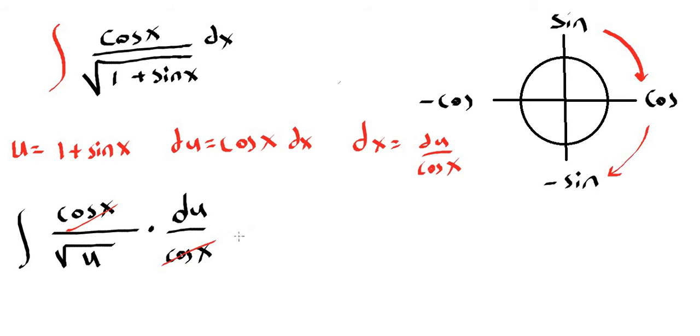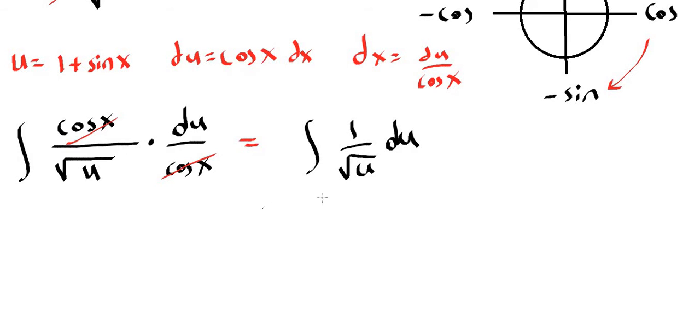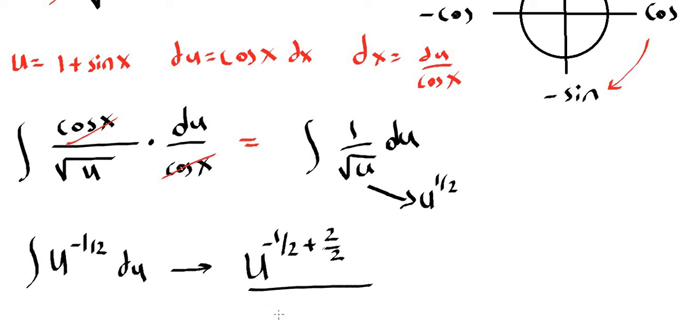Now we can rewrite our integral as 1 over square root of u du. Now we know how to integrate this. We can rewrite square root of u as u to the 1 half and if we take it to the numerator it's going to be negative 1 half. Now we can apply basic integration technique. So we can add 1 to the power and divide it by the power.